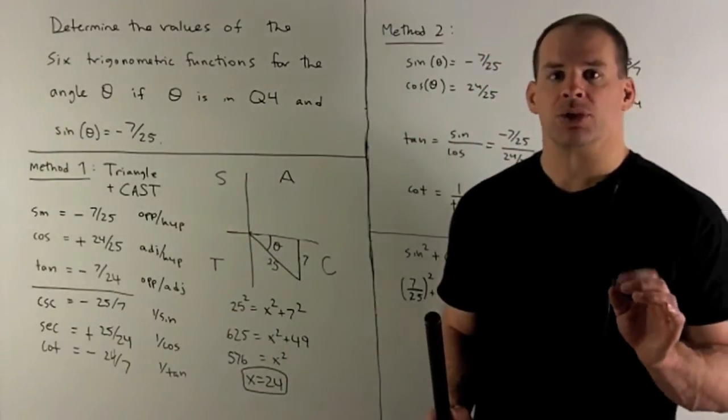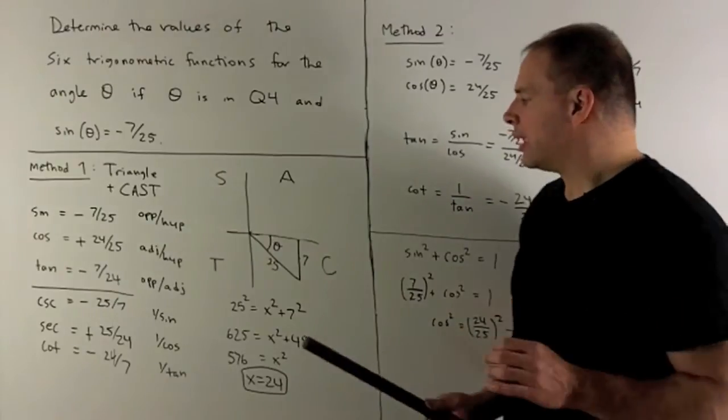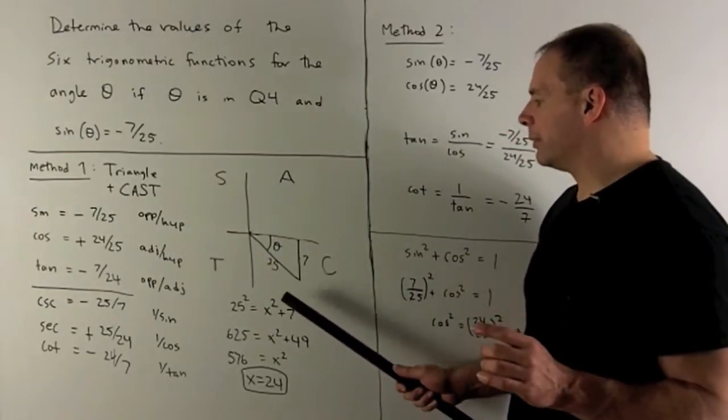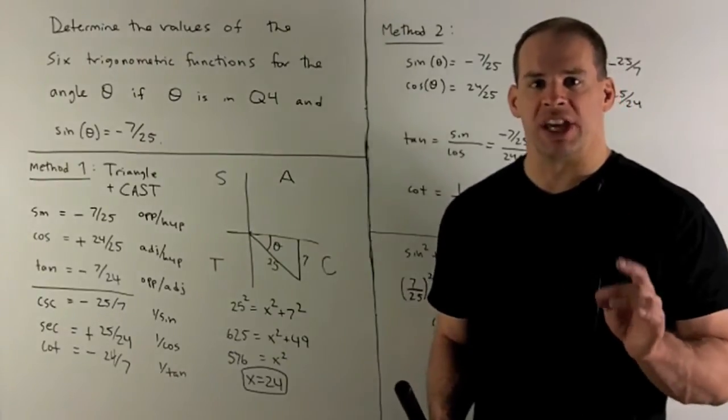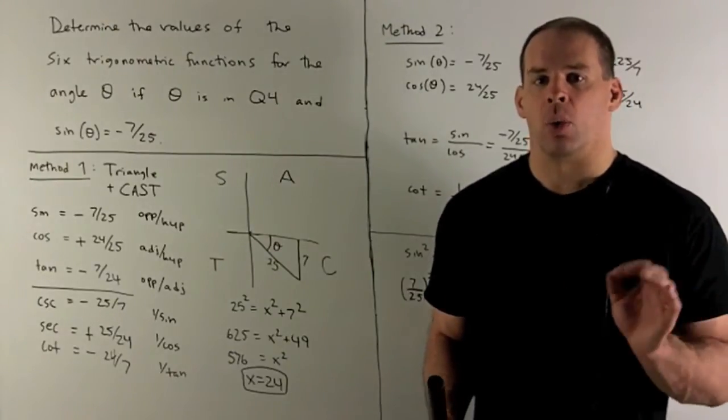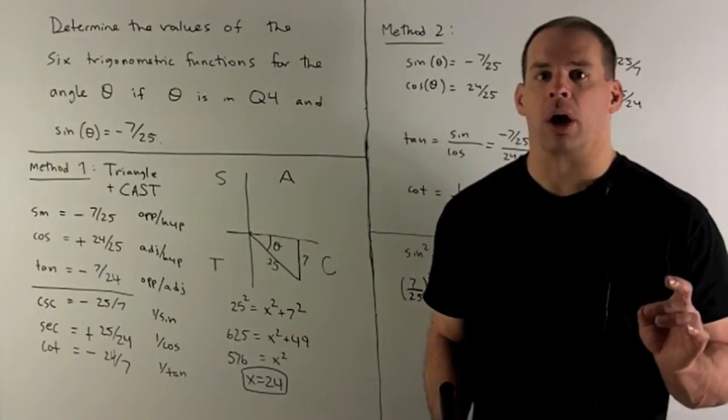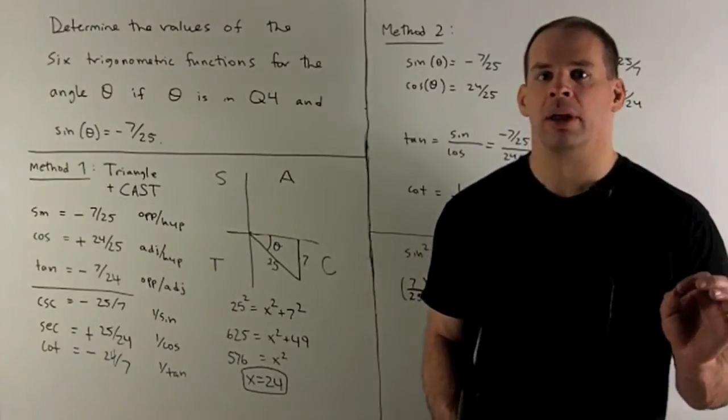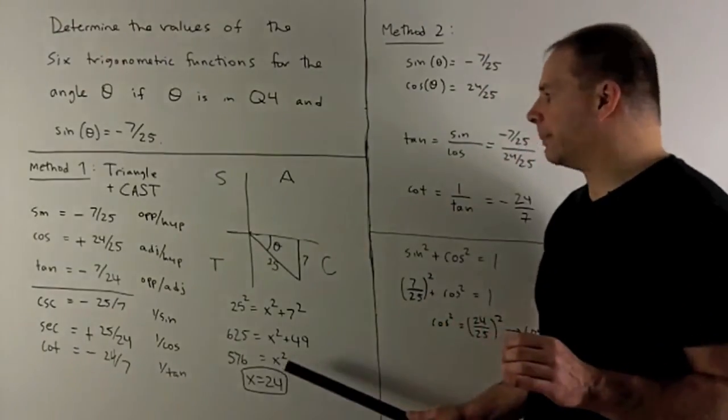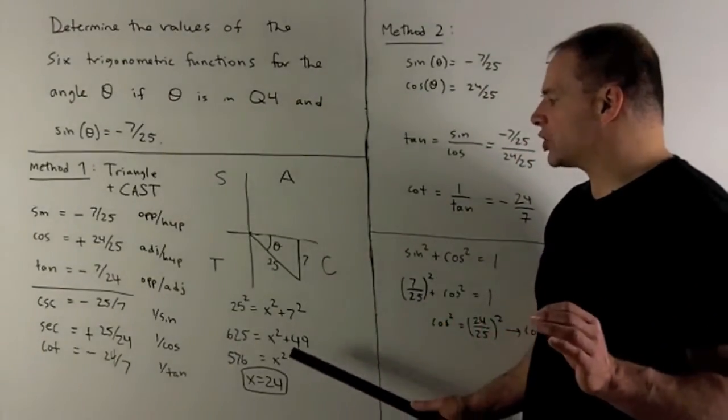So I need the adjacent. We're going to use Pythagorean theorem: 25 squared equals the adjacent squared plus 7 squared. That gives me the adjacent squared is 576, or the adjacent is 24. You might know off the top of your head, 7, 24, 25 right triangle, but if not, that's how we get it. So, adjacent is 24.